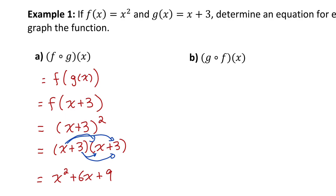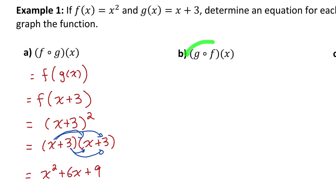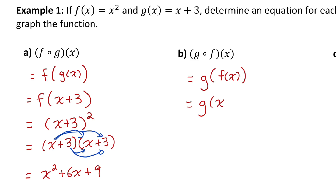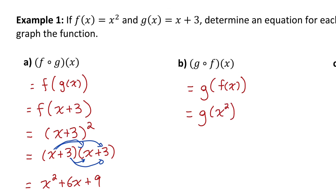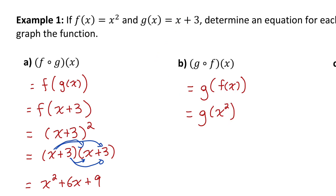Let's try doing it the other way. Part b: this notation says we have g composed of f of x, or g of f of x. So f of x is the input for the g of x function. And f of x is just the x squared function. So this is equal to g of x squared. That x squared becomes the input for x in the g of x function, so I switch that x to x squared, making the function x squared plus 3.